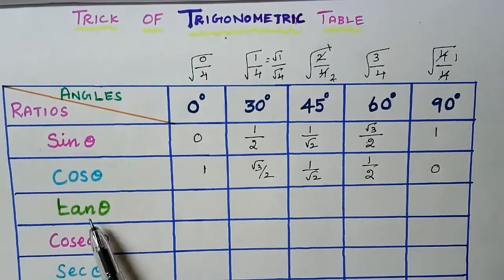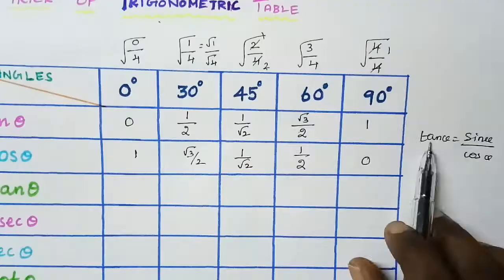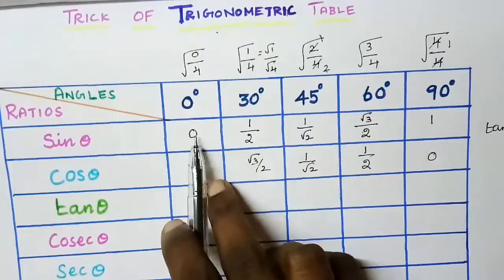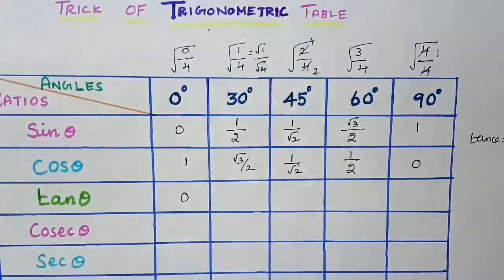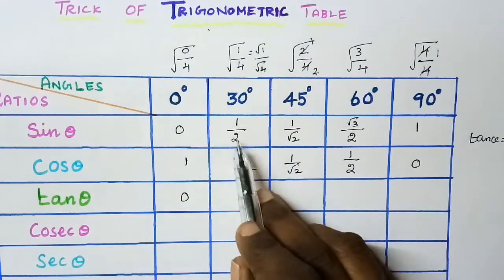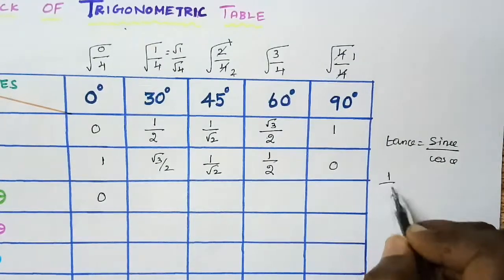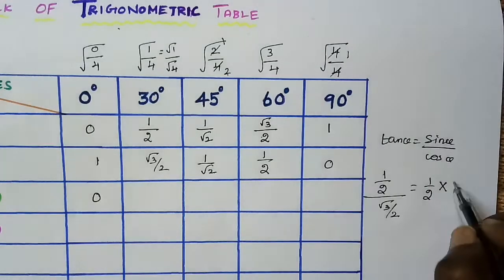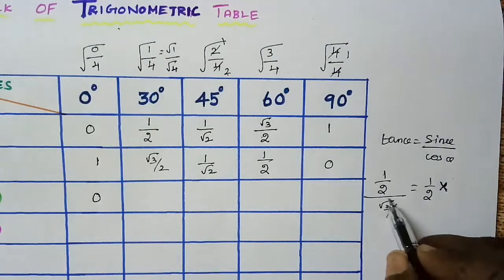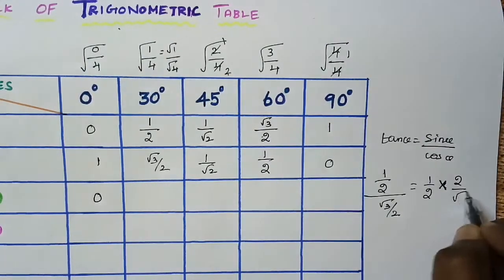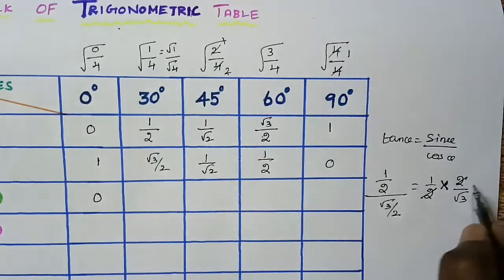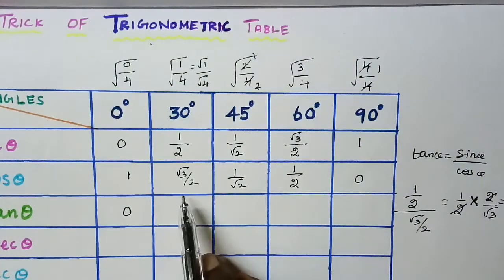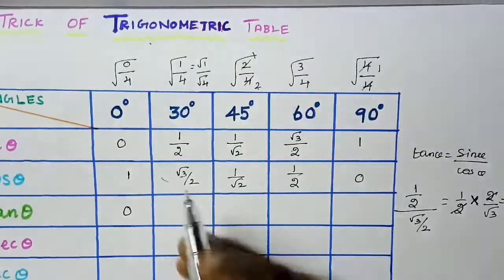Next we are going to find out tan theta values. We know that tan theta equals sin theta divided by cos theta. So 0 divided by 1 is 0. Next, 1/2 divided by root 3/2: multiply by the reciprocal, so 1/2 times 2/root 3. The 2s cancel and we get 1 by root 3.